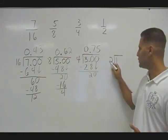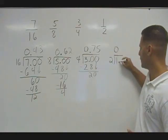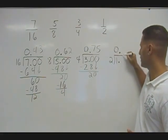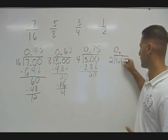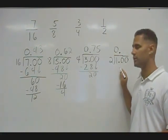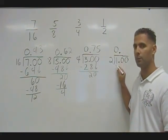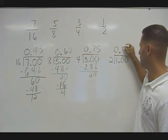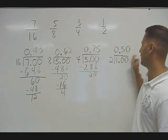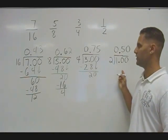And now two cannot fit into one, so we place a zero here. We put a decimal and two zeros after. So I essentially change this problem into one dollar divided by two. And of course, we all know that we can fit two groups of fifty cents into one dollar.